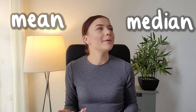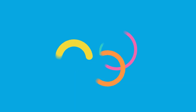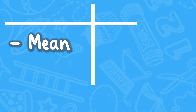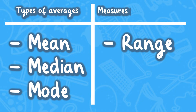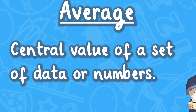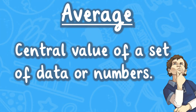What exactly are mean, median, mode and range? In maths, the mean, median and mode are types of averages, while the range measures the spread of data. An average is a central value of a set of data or numbers. You can calculate each of these averages in different ways.